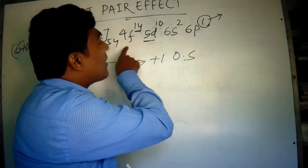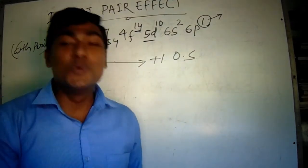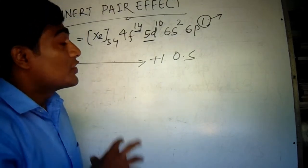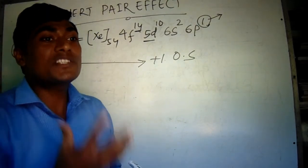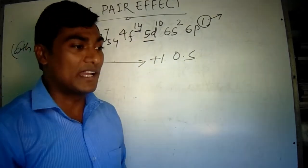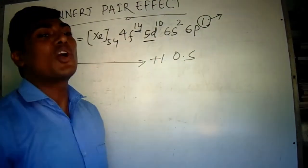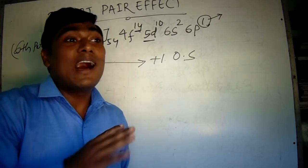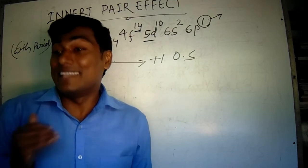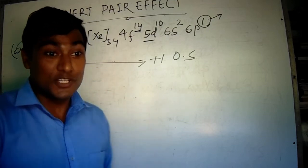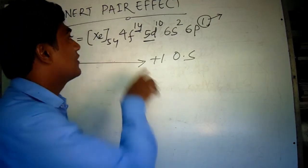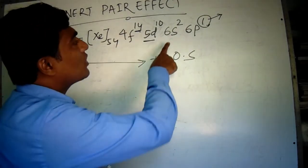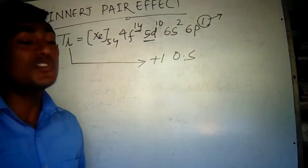But these two subshells can't screen the nucleus properly. And that's why the nucleus attracts with sufficient energy these two electrons in S orbital. That's why they become inert. They are not ionized then. So the main cause is the improper screening of the 4F and 5D subshells. That's why the two electrons in S subshells become inert.